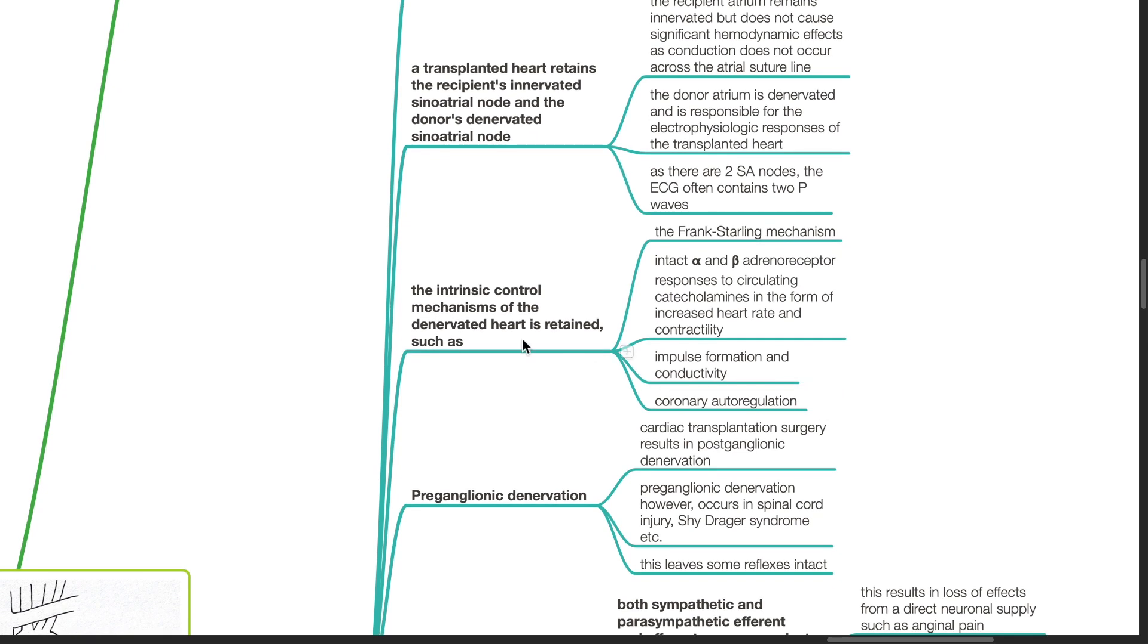Intrinsic control mechanisms of the denervated heart are retained, such as the Frank-Starling mechanism, intact alpha and beta-adrenoceptor responses to circulating catecholamines in the form of increased heart rate and contractility, impulse formation and conductivity, and coronary autoregulation.